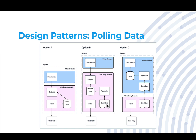When we look at Option B, which is a true event-driven approach, we have a poller that's hitting the third party, getting the data in whatever form it is, and then putting it on the event bus. So we're splitting up the operations into two independent applications. We have a poller for getting the data at some interval, and then we have an aggregator that takes the data from the poller off of the event bus and aggregates it.